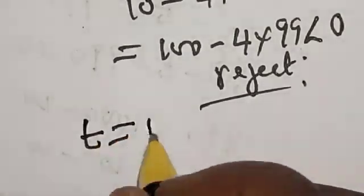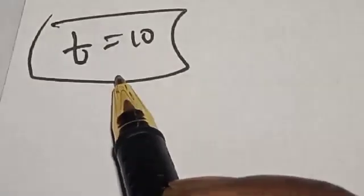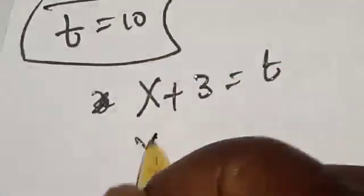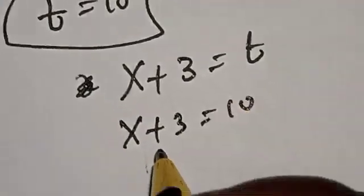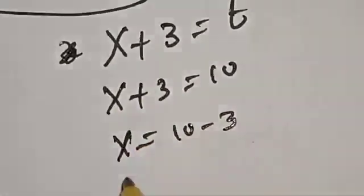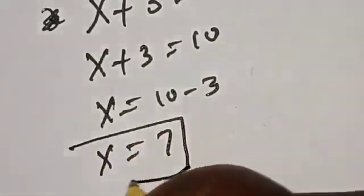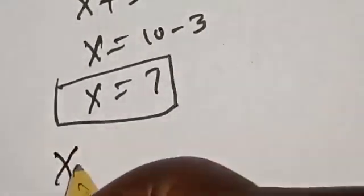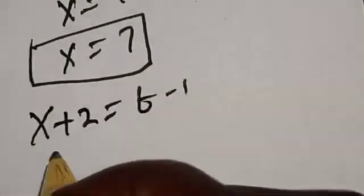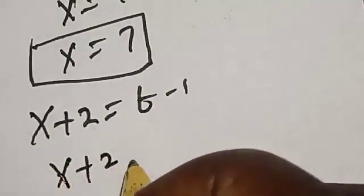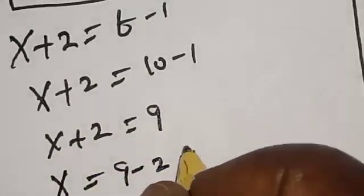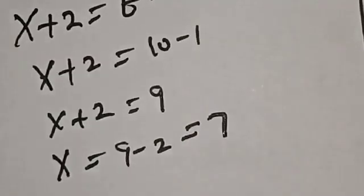We have t = 10. Since s+3 = t, we get s+3 = 10, so s = 10 - 3 = 7. We can also verify using s+2: s+2 = t-1 = 10-1 = 9, therefore s = 9 - 2 = 7.